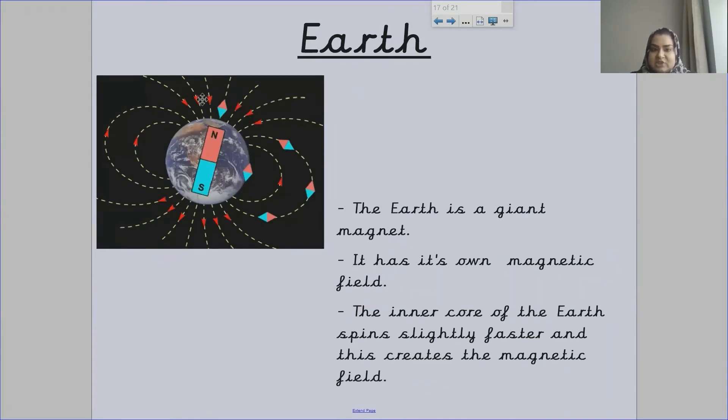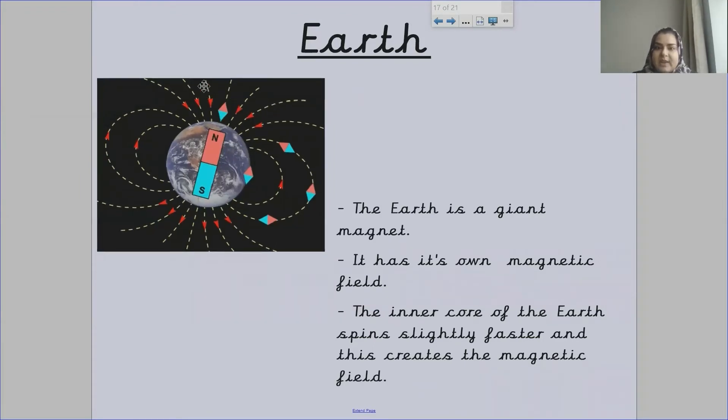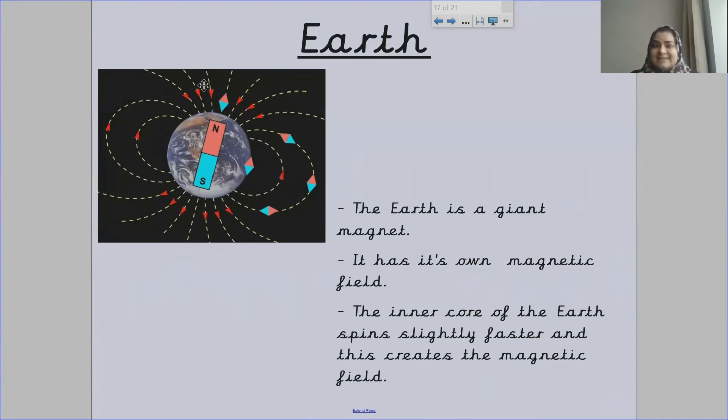This section is about Earth. The Earth itself is a giant magnet. Have a look at this picture. Obviously, when you look at Earth from the universe or space, it doesn't have a visible magnet like that. But what this picture is trying to show you is that Earth is a huge magnet itself.